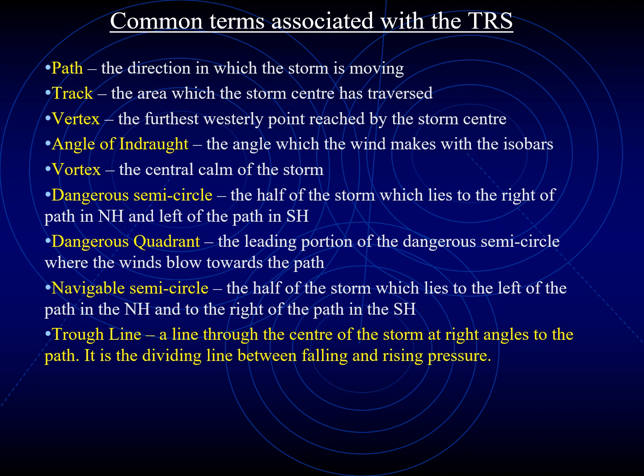We have the dangerous semicircle, which is the half of the storm that lies to the right of the path in the northern hemisphere and left of the path in the southern hemisphere. We have the dangerous quadrant, which is the leading portion of the dangerous semicircle where the winds blow towards the path. We have the navigable semicircle, which is the half of the storm that lies to the left of the path in the northern hemisphere and right of the path in the southern hemisphere.